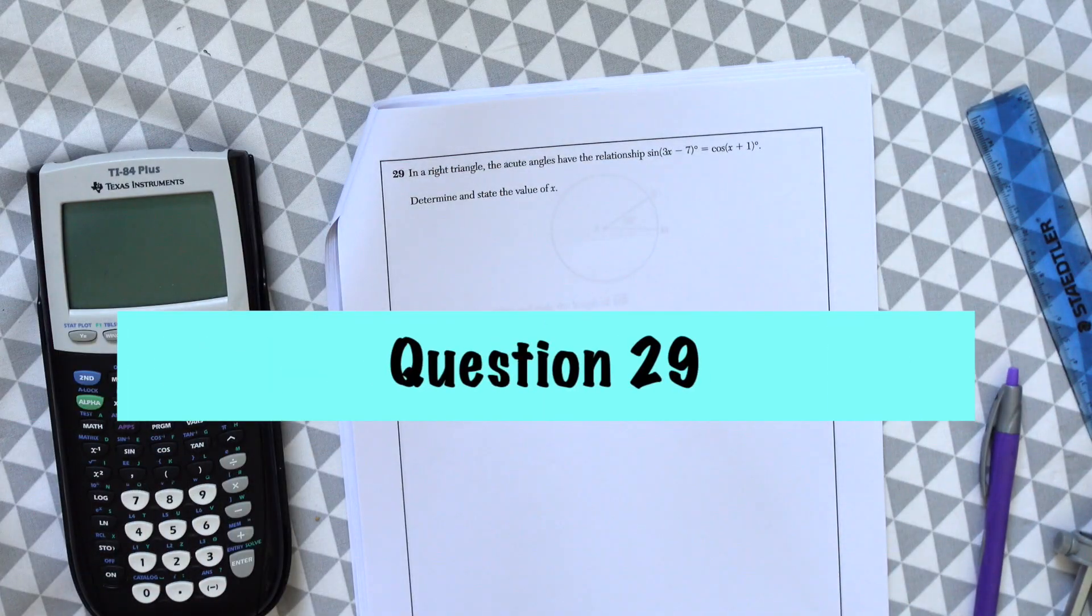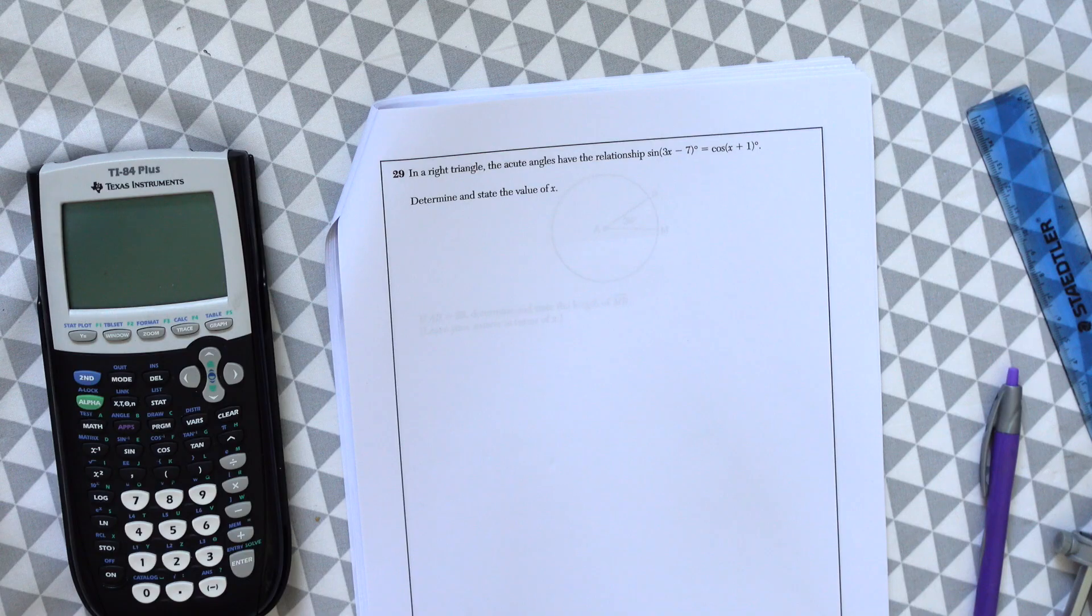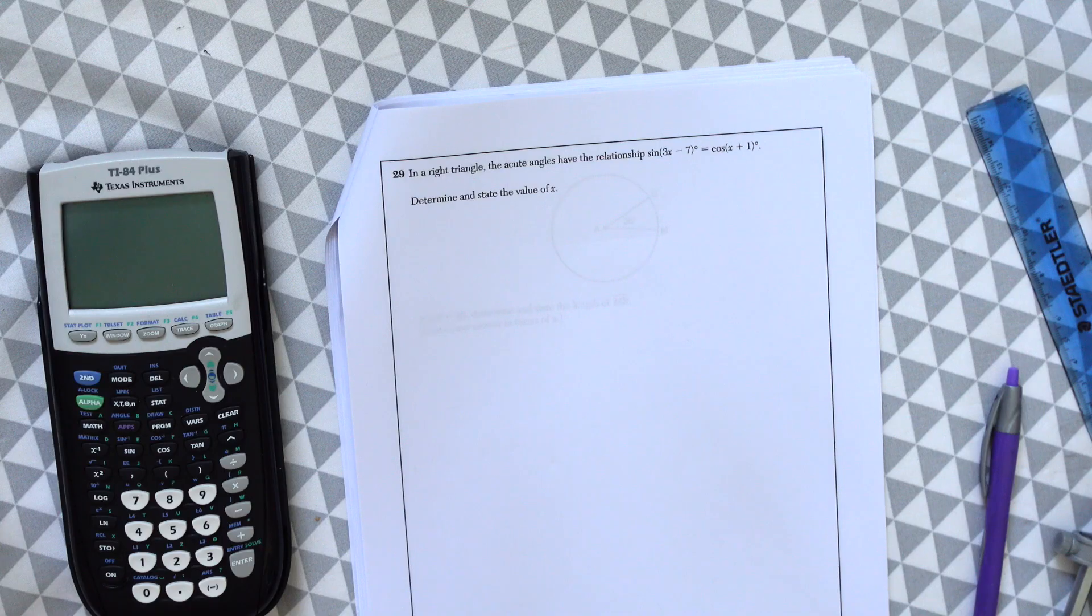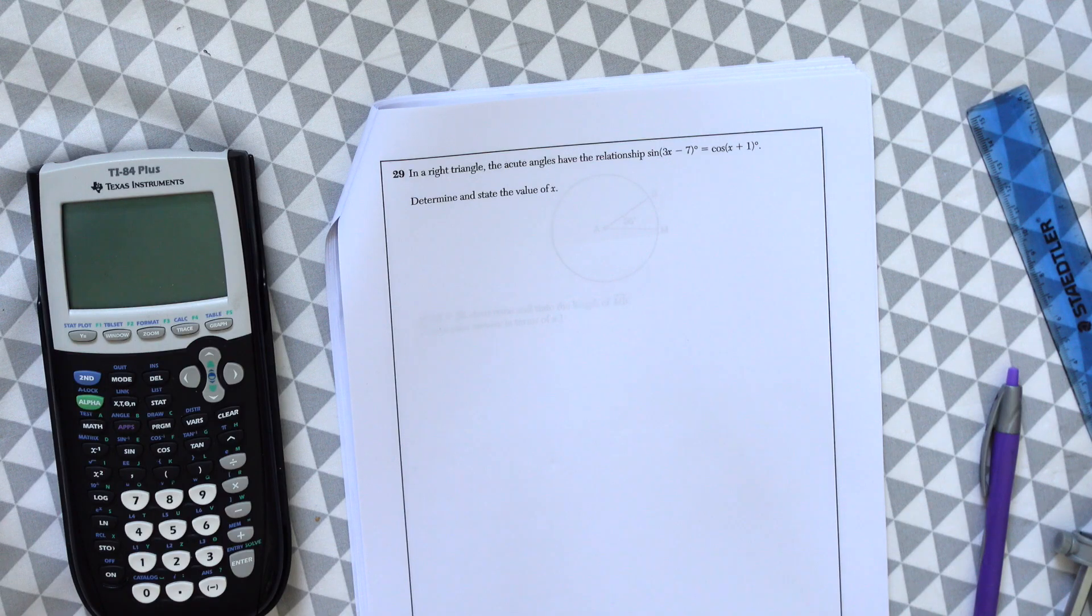Question 29. In a right triangle, the acute angles have the relationship sine of 3x minus 7 degrees is equal to cosine of x plus 1 degrees. Determine and state the value of x.